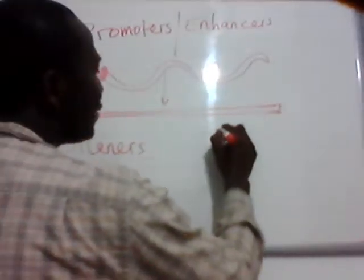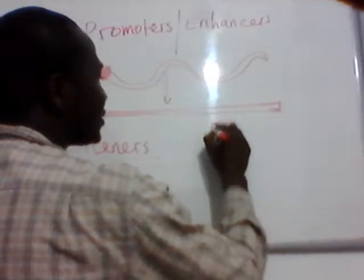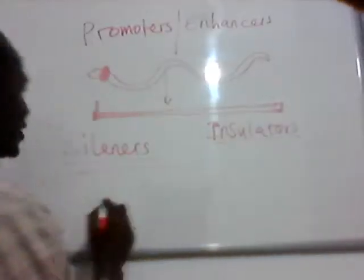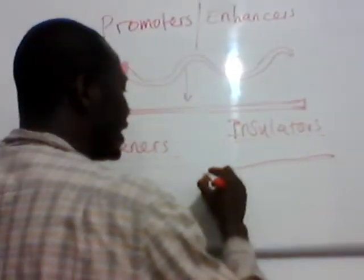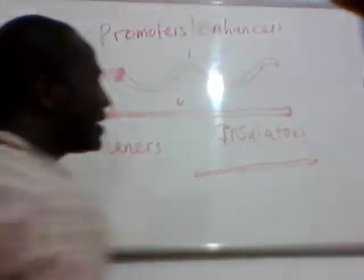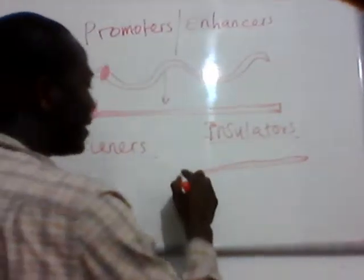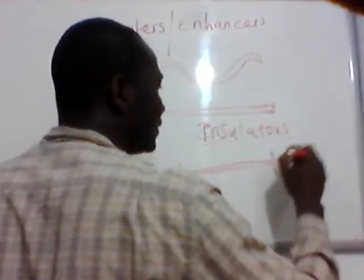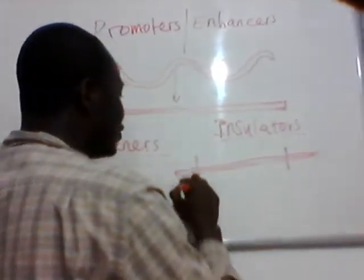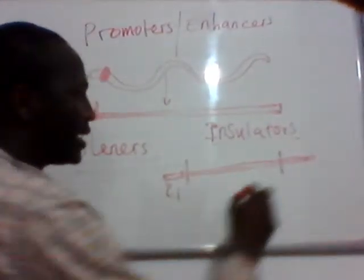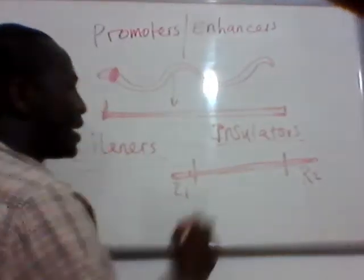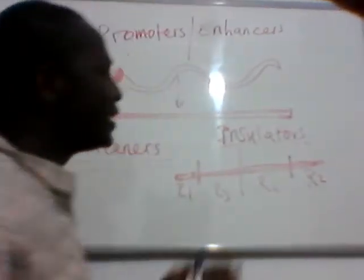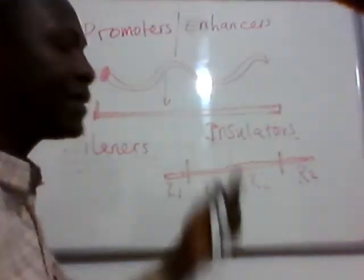The third one is what we call insulators. Let's say this is your gene, and along this gene you have region one (R1), region two (R2), region three (R3), and region four (R4). This can come as a result of alternative splicing.